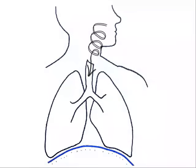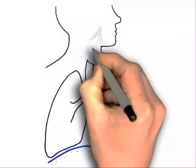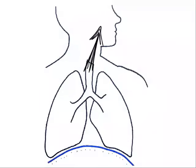During exhalation, the lungs are compressed and the air is pushed out because the ribcage and the diaphragm return to their relaxed position.